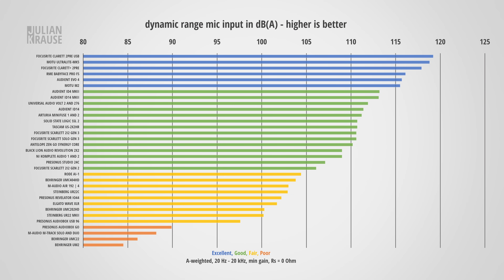Noise should of course also be as low as possible, so let's have a look at the dynamic range. The dynamic range is the ratio of the highest level the interface can capture and its noise floor — you want this to be as high as possible, as a higher dynamic range allows you to leave yourself more headroom without introducing additional noise. With 102 dBA, the IO44 sits a little lower on the chart, but 100 dB is already plenty in most scenarios.